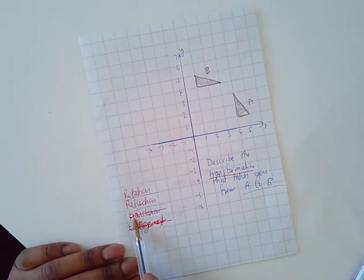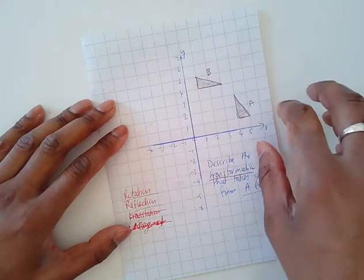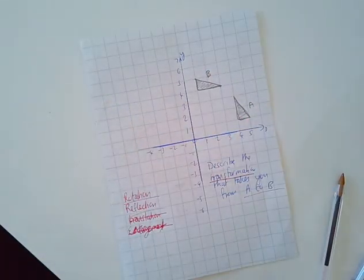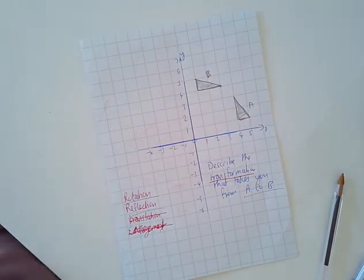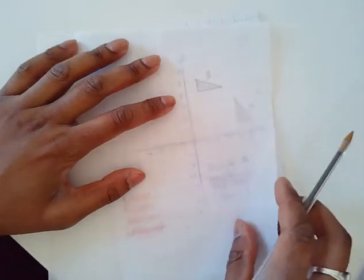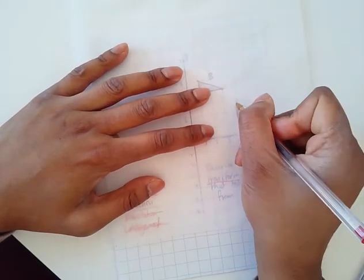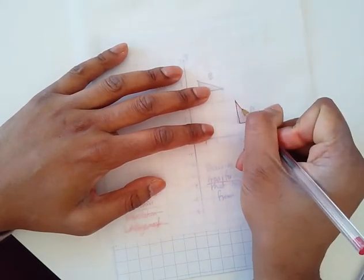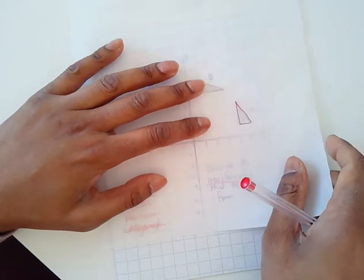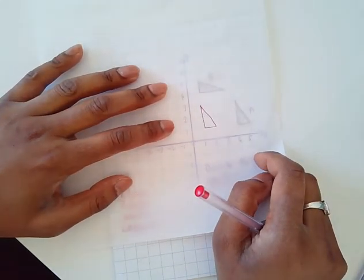Could it be translation? Translation means moving left, right, up, or down - no rotation is allowed. I'll just try that then. We'll try translation. Remember, I can only move left, right, up, or down, so I'll need to move left and then up.